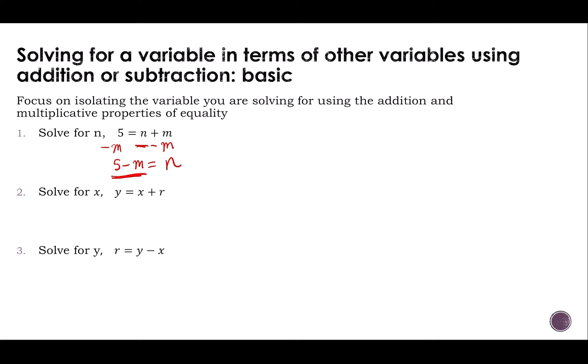I need to solve for x, y equals x plus r. Again, I need to get that x all by itself, so I'm going to subtract r from both sides. I get y minus r equals x, and then we're done. That's all you have to do. You've isolated your variable.